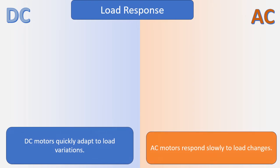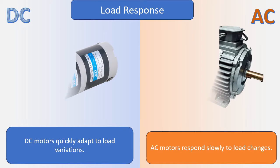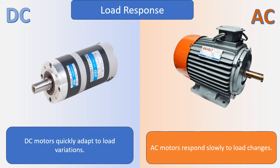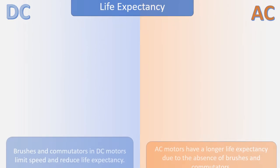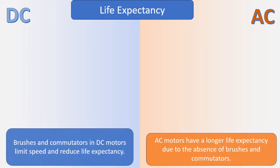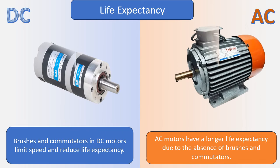Load response: AC motors respond slowly to load changes, whereas DC motors quickly adapt to load variations. Life expectancy: AC motors have a longer life expectancy due to the absence of brushes and commutators. Brushes and commutators in DC motors limit speed and reduce life expectancy.